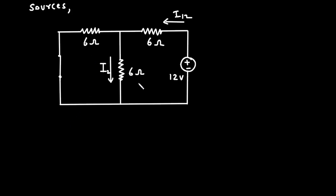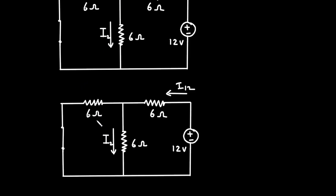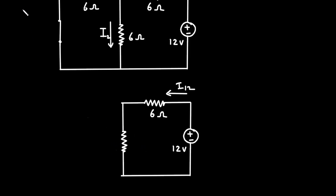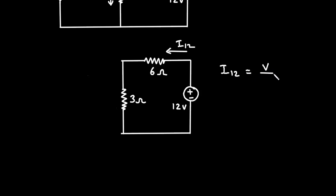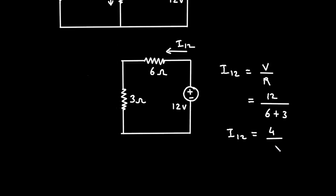This 6 ohm and this 6 ohm are connected in parallel, so their equivalent resistance will be 3 ohm. We can replace these two resistors by a single resistor of 3 ohm. Now we can easily find I12. I12 = V / R, where V = 12 and R = 6 + 3. Therefore I12 = 12 / (6 + 3) = 12 / 9 = 4/3 ampere.